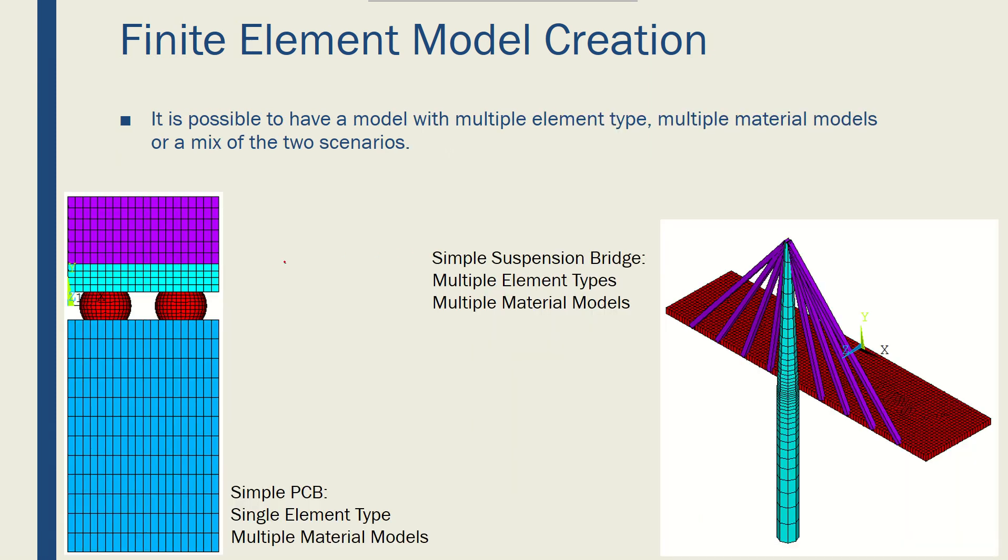Finally, you can have multiple elements and multiple materials in a single simulation. Here, on a very simplified model of a PCB, I have a structural element and different materials. So I have one material for the PCB, one for the solder joints, one for the substrate, and one for the molding compound.